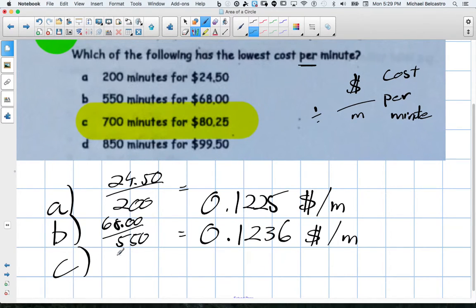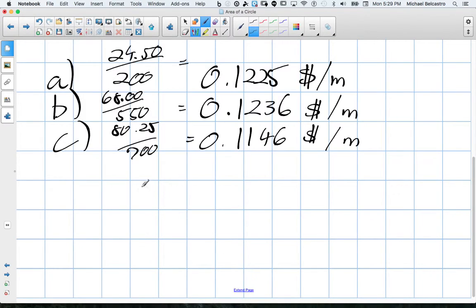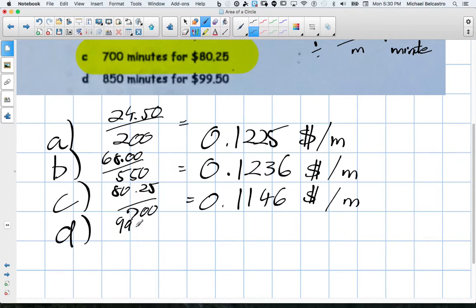C is $80.25 over 700. What does that become? 0.1146. Okay. And D is $99 over 850. What does that equal? 0.1170.